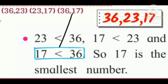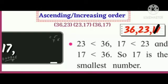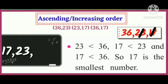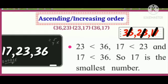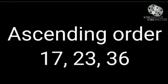And 36 and 17 — 17 is less than 36. So 17 is the smallest number. Cross out 17 and write it on the slate. Of the remaining numbers, 23 is the smaller number, so we cross out 23 and write it after 17. Now cross out the last number 36 and write it after 23. That is the ascending order of the numbers. We write ascending order like this: 17, 23, and 36.